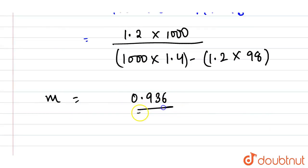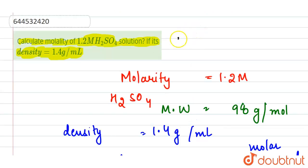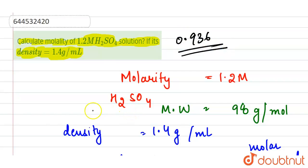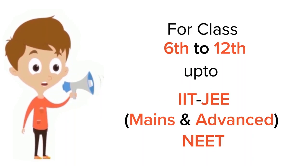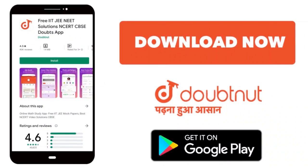The molality is equal to 0.936, represented with the unit small 'm' for molality. So our answer is 0.936 m. Thank you. For class 6–12, IIT JEE, and NEET level — trusted by more than 5 crore students — download the Doubtnut app today.